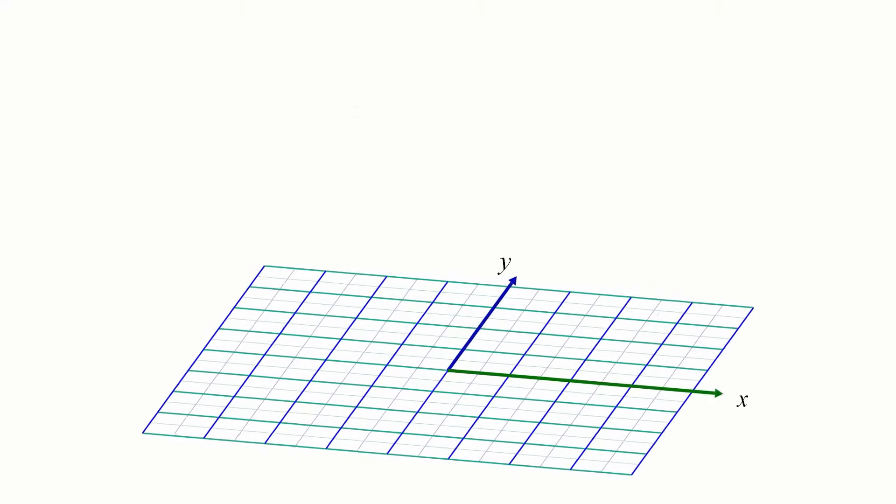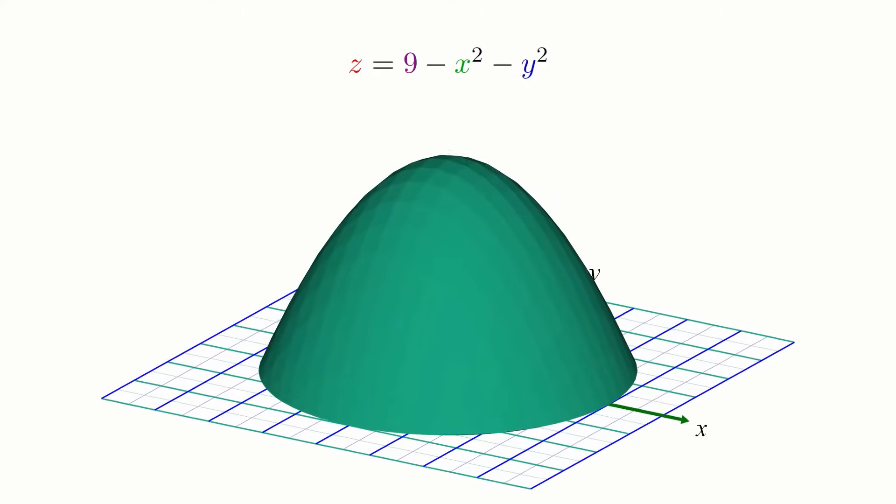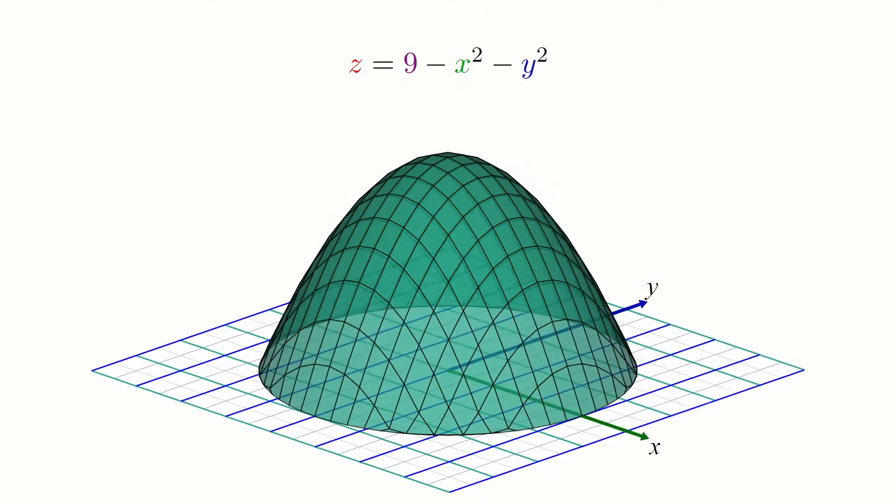Take the surface whose equation is z equals 9 minus x squared minus y squared, and let's say we want to find the volume under the surface but above the xy plane.